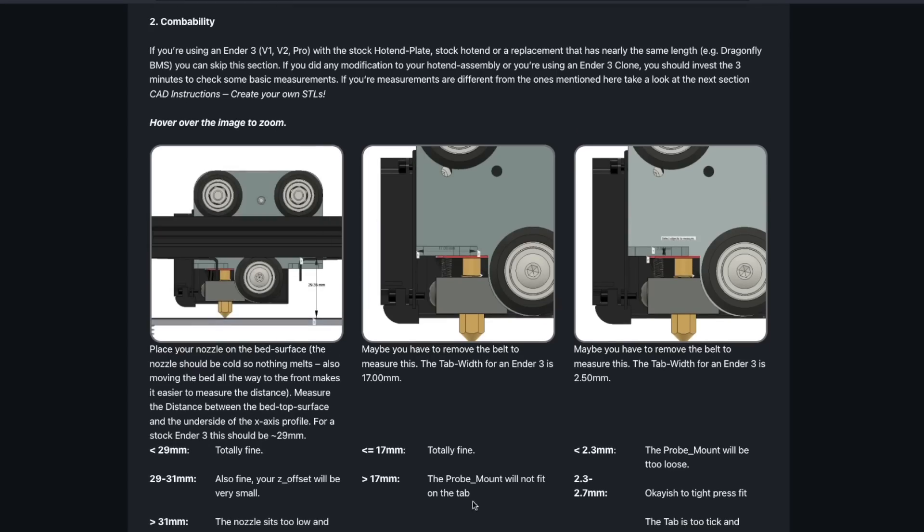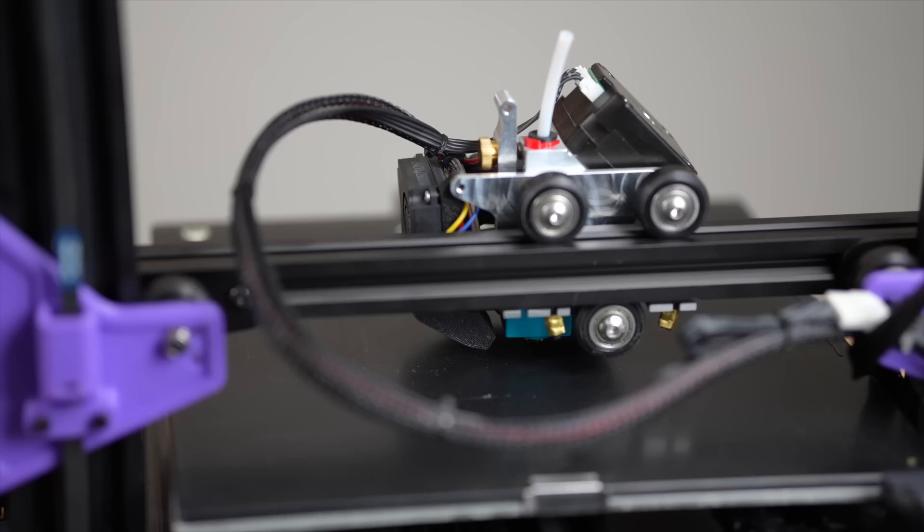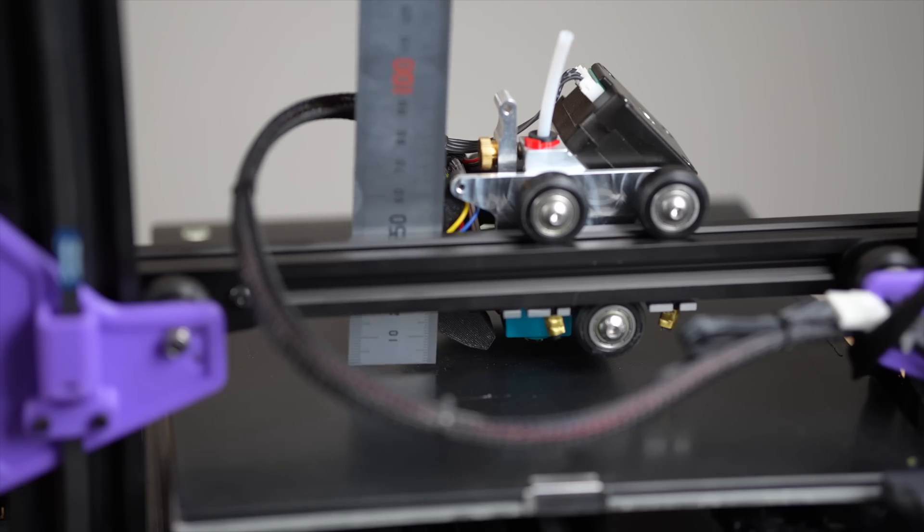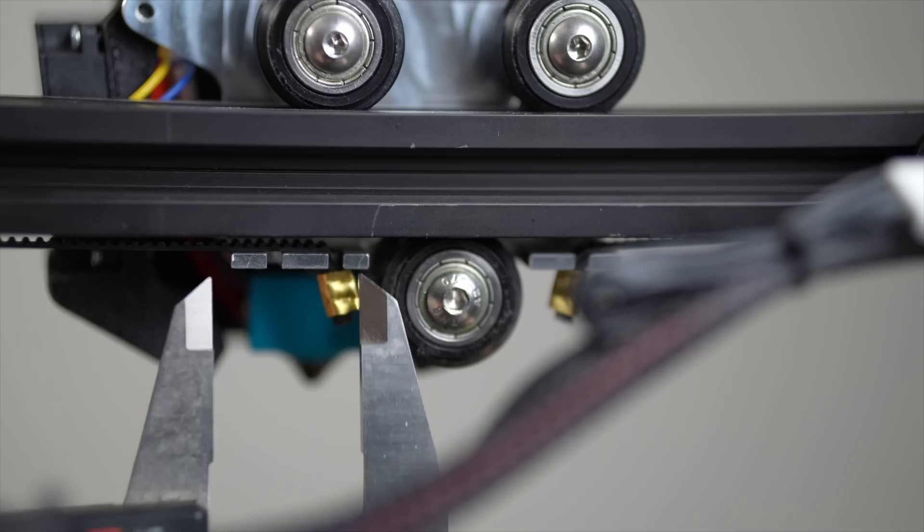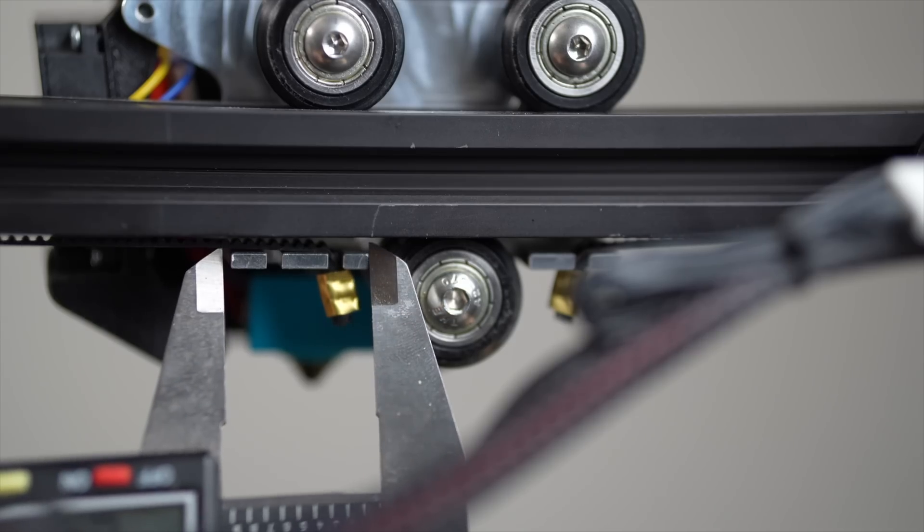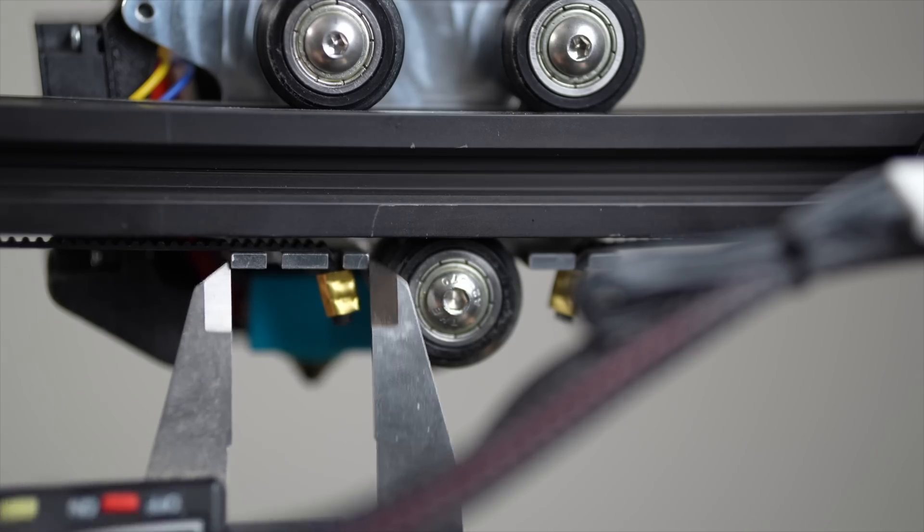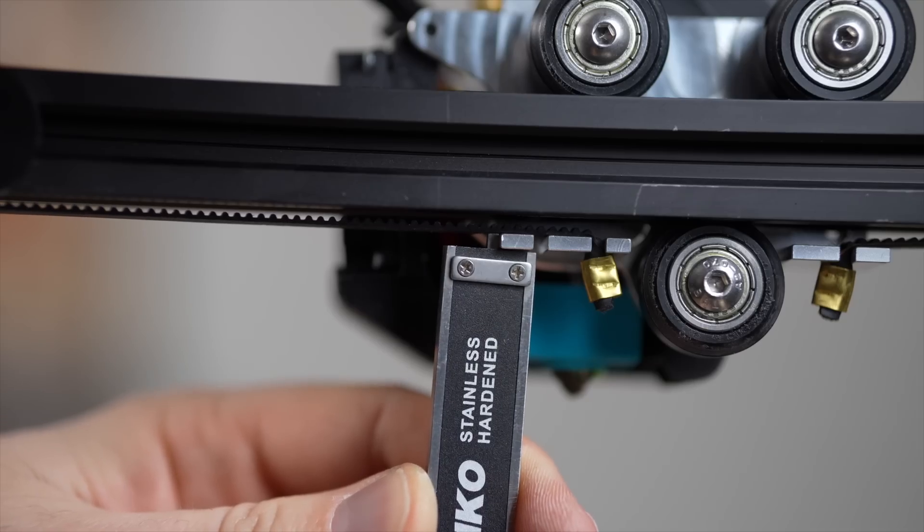If you are running a custom toolhead of sorts, you'll want to check on the Kevin aka Sam website. There is a compatibility section where it'll basically have you take some measurements from the nozzle touching the bed, how far is the gap to the bottom of the X extrusion and the tabs on the back of the X plate that the belts loop around. You'll want to measure the width and the thickness of that, again, if you're running a custom toolhead.